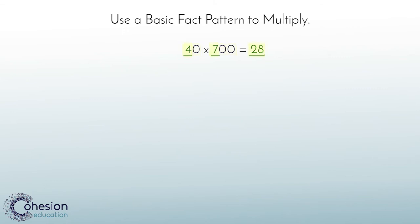Now that we know our basic fact, we need to begin to add back the zeros. We will use the powers of 10 to help keep track of them. Starting at the beginning, we know that 4 times 7 times the first power of 10 is 280. This is the same as 4 times 70.